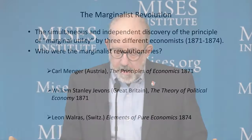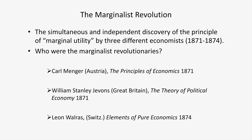The Austrian school was founded during the Marginalist Revolution by Karl Menger. He wrote a book in 1871. At the same time, or very nearly the same time, two other economists — one British, one French — wrote books that developed the principle of marginal utility.